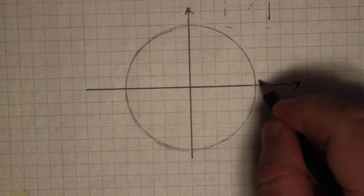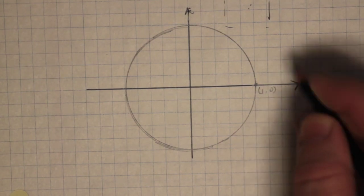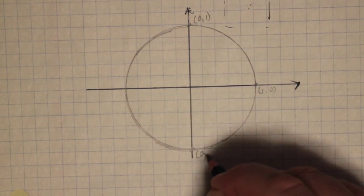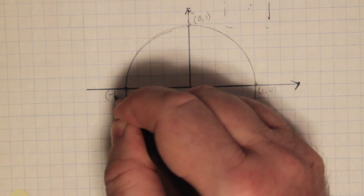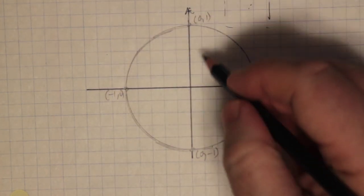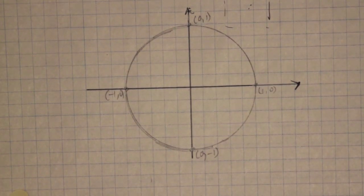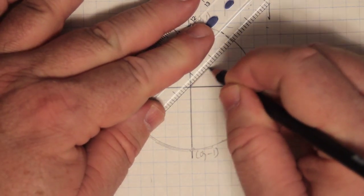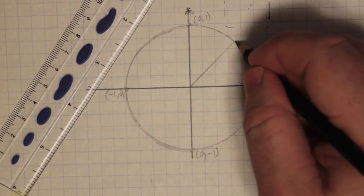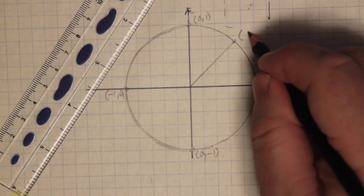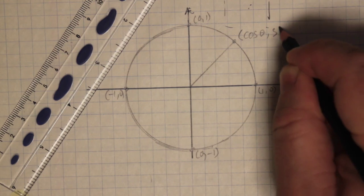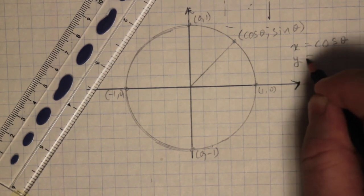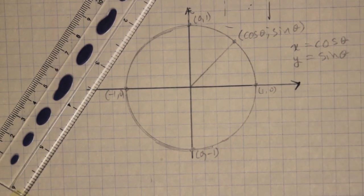If you recall, this is the point (1, 0), this is the point (0, 1), this is (0, −1), and this is (−1, 0). We drew a terminal arm going to some random point (x, y), which turned out to be (cos θ, sin θ). The x-coordinate is cos θ, and the y-coordinate is sin θ, for our unit circle.